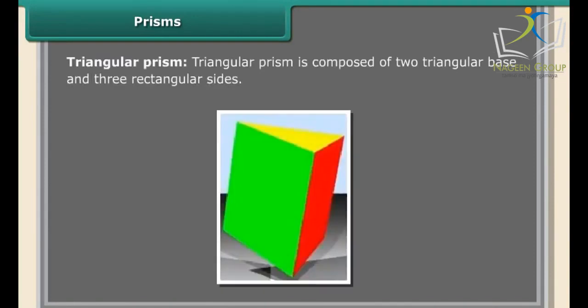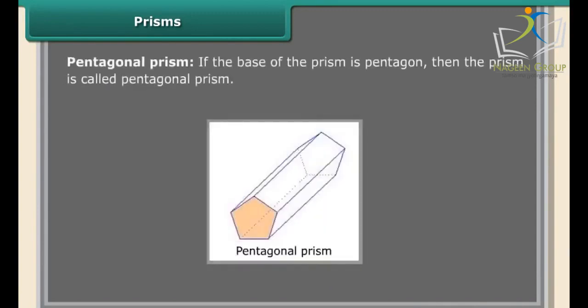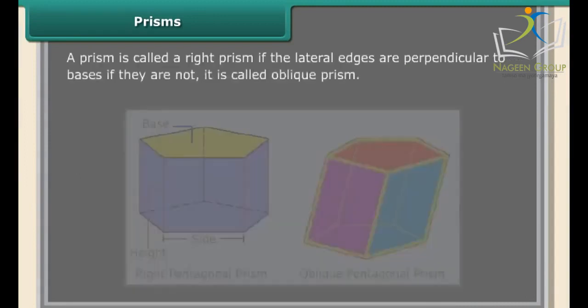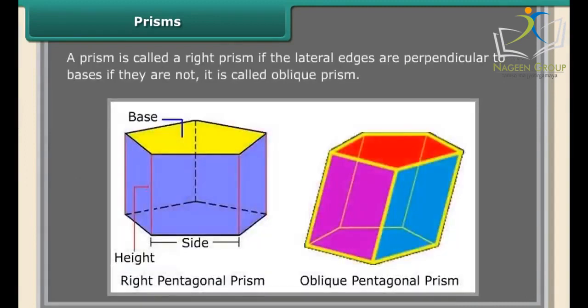A triangular prism is composed of two triangular bases and three rectangular sides. If the base of the prism is a pentagon, it is called a pentagonal prism. A prism is called a right prism if the lateral edges are perpendicular to the bases; otherwise, it is called an oblique prism.